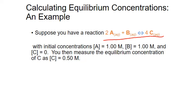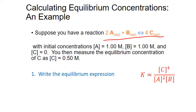In order to calculate the equilibrium constant K for this, we're going to complete three steps. First, we have to figure out what the equilibrium expression is that we'll use to calculate K. We can do this as long as we know the balanced chemical equation. In this case, the equilibrium expression is the concentration of our product C raised to the fourth power divided by, in the denominator, the concentration of A squared times the concentration of B.